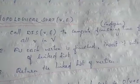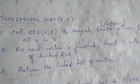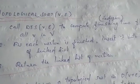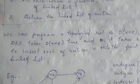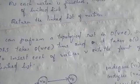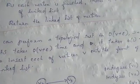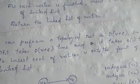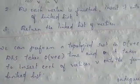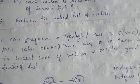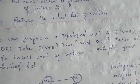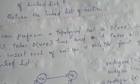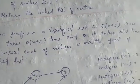Using topological sort, the sorted order runs in O(V + E) time, because DFS is O(V + E) and inserting each vertex takes O(1).